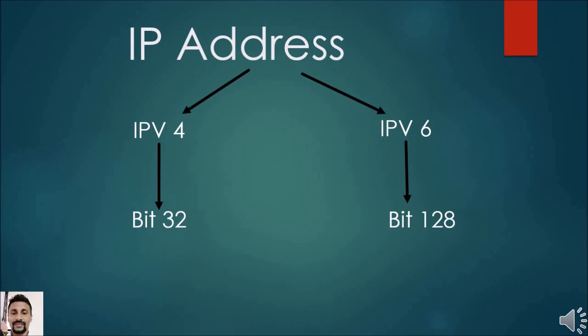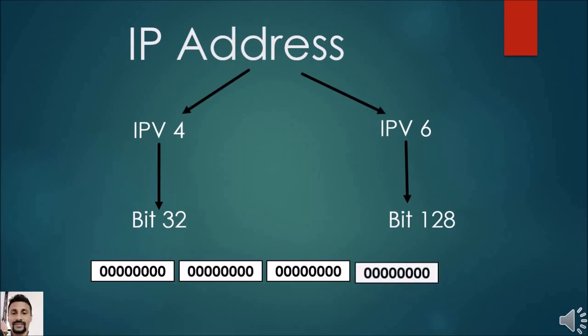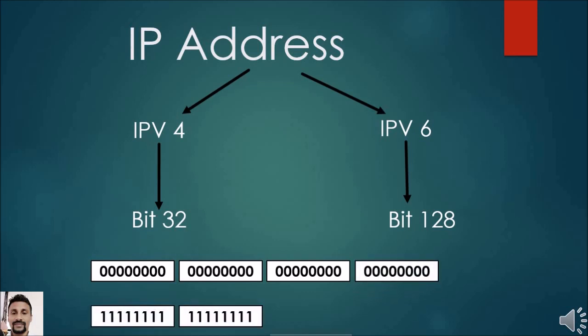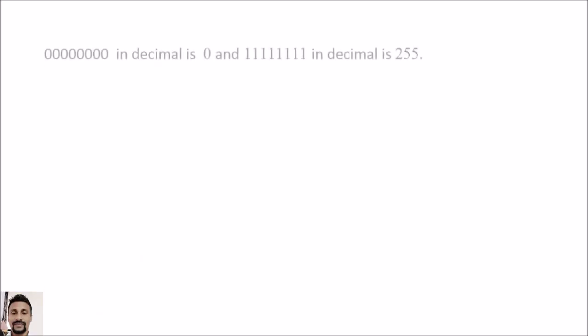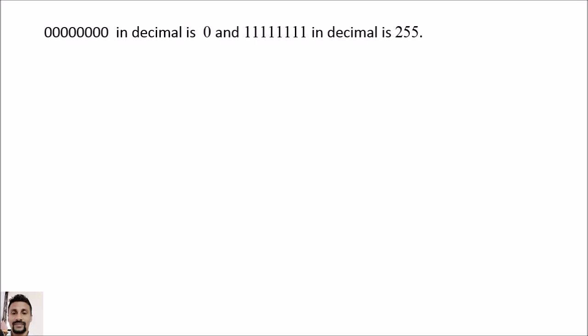As mentioned earlier, there are 32 bits for IPv4 addresses, so it is separated into four portions, and each portion has 8 bits. If all bits are zeros, the decimal value is zero. If all are ones, the decimal value is 255. That means each portion can have a value between 0 and 255.